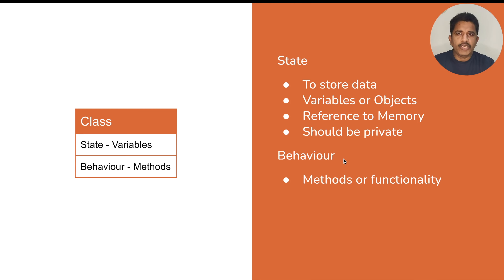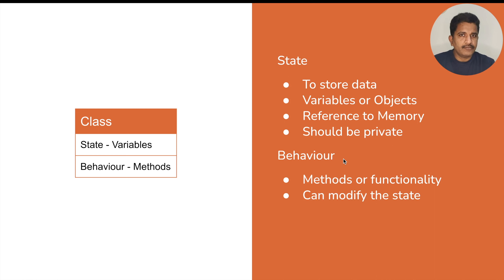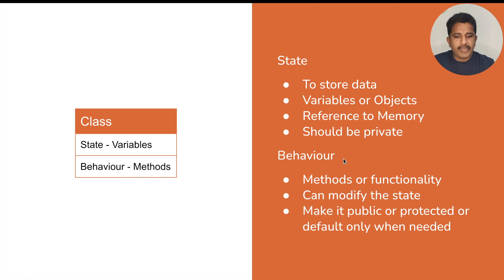For behavior we usually use methods — every class will have either variables or methods. Methods can modify the state and only they should be able to modify the state; outside members should never be able to modify the state of a class directly. These behavior methods can be kept public, protected, or default — only when necessary should we restrict the access so that only specific entities can access them.